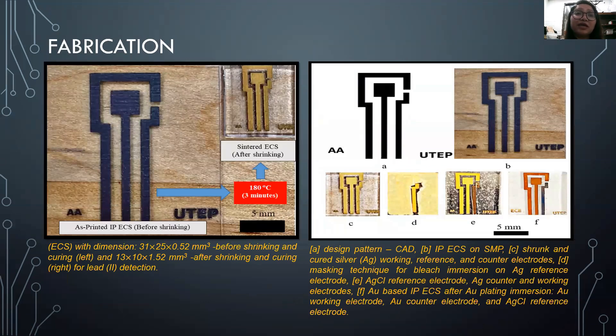The reported sensor was fabricated in six easy and simple steps. At first, it was designed using CAD software. Then it was inkjet-printed using Fujifilm Dimatix DMP-2850 with 50 nanometer diameter silver nanoparticle conductive ink.